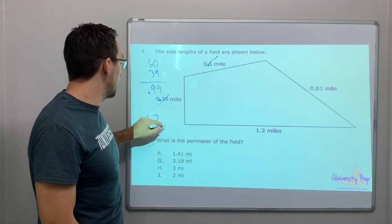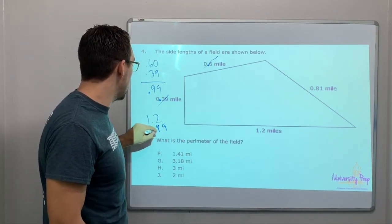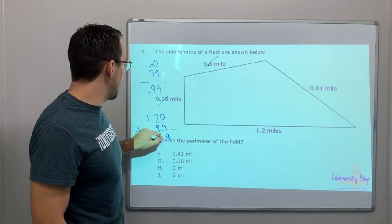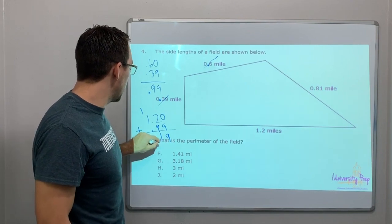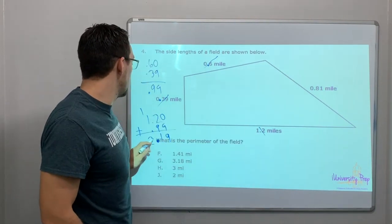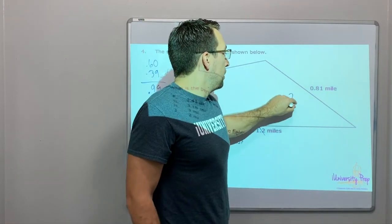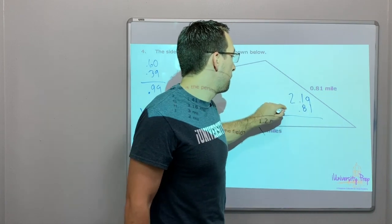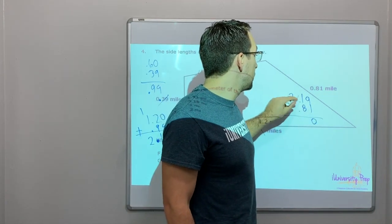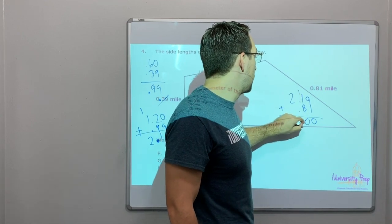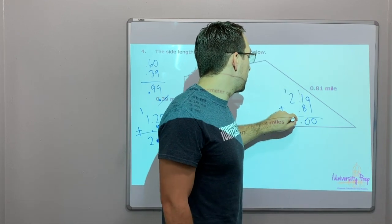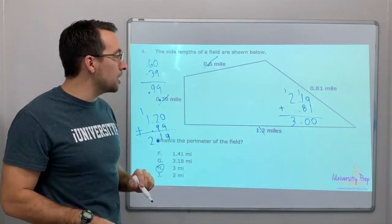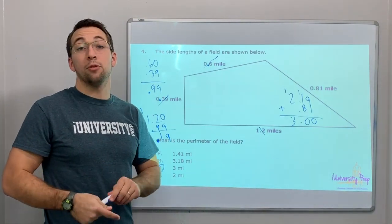So we'll do 1.2 plus .99. We can add a zero — 1.20 plus .99. 2 plus 9 is 11, carry my 1, gives us 2.19. Then 2.19 plus .81: 9 plus 1 is 10, carry the 1, gives us zero; carry the 1, gives us 3. So 3 miles is the perimeter of the field.